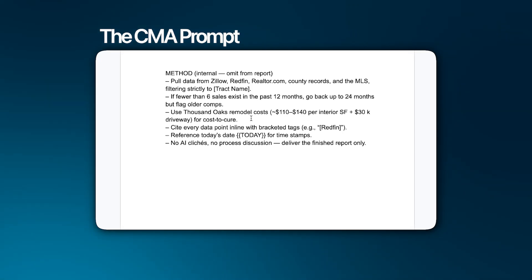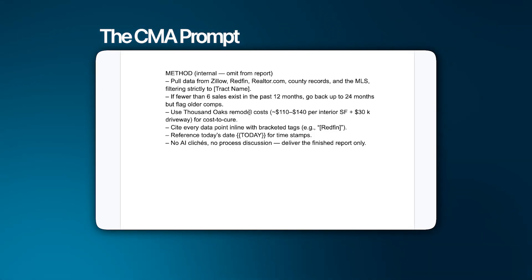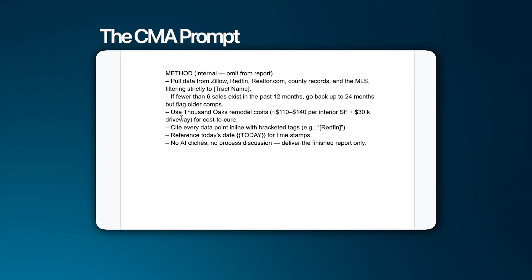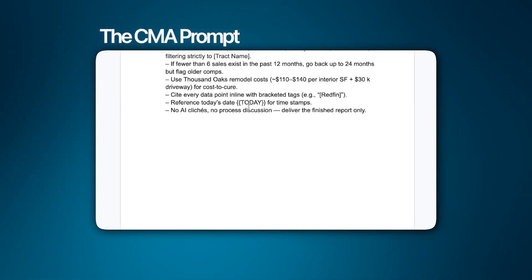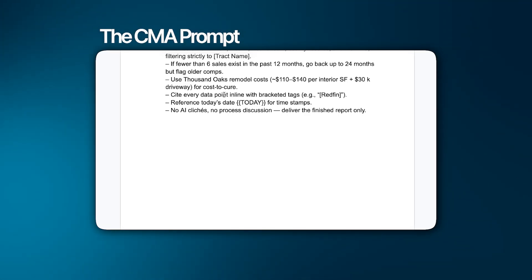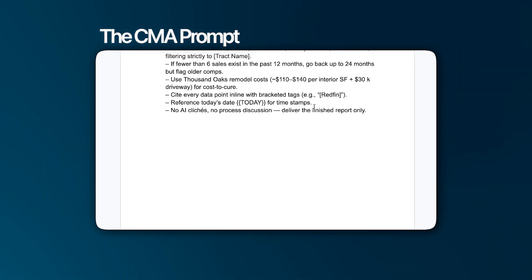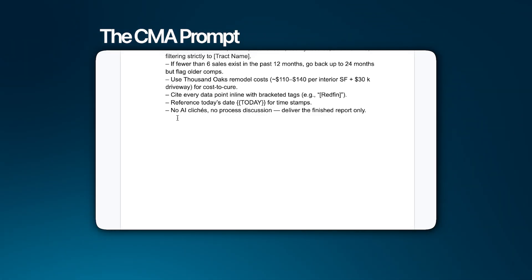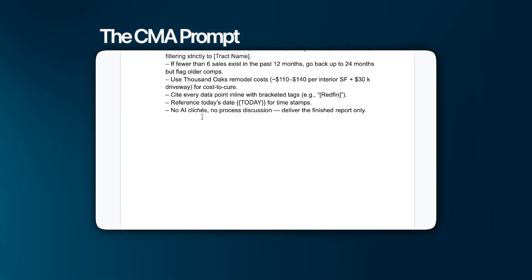I put: pull data from Zillow, Redfin, Realtor.com, county records, and the MLS, filtering strictly to the tract name. If fewer than six sales exist in the past twelve months, go back up to twenty-four months but flag older comps. Use Thousand Oaks remodel costs — I made it local to Thousand Oaks because that's where this listing is. Cite every data point in line with brackets so I know the source — Redfin, Zillow, Homes, Realtor. Reference today's date. No AI clichés, no process discussion — deliver the finished report only.